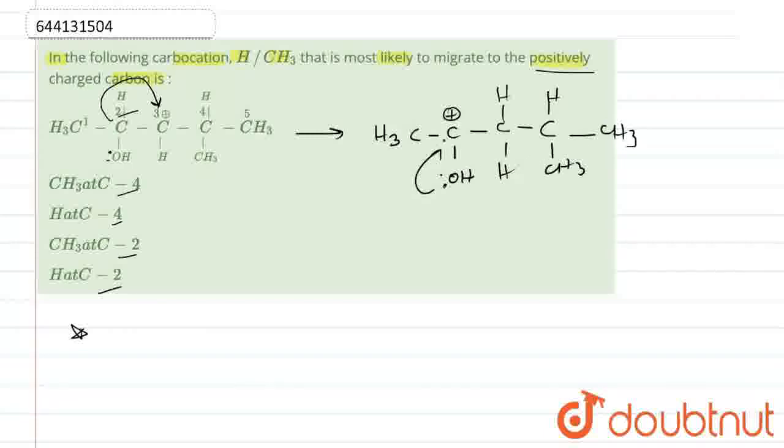So, this lone pair will attack this positive charge, and then the further structure that is formed is actually CH3C, and then O contains positive charge. We have H, we have H, and then it is CH3C, and similarly CH3 is attached to each one of them.